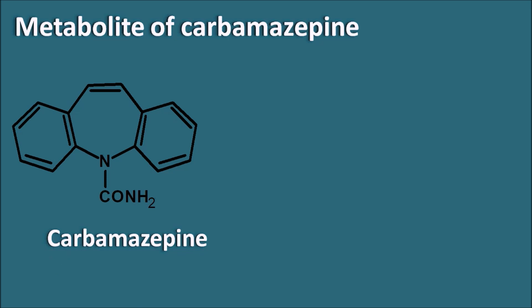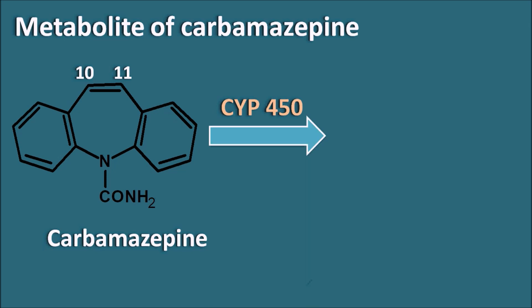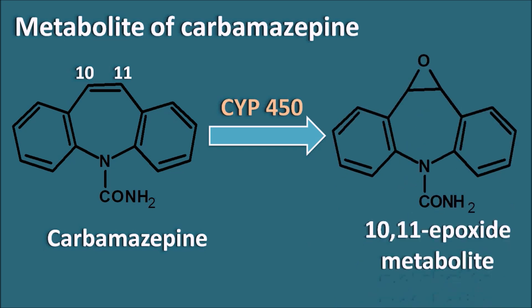Regarding the metabolite of carbamazepine: it has a double bond at the 10th and 11th position, which makes it susceptible to metabolic oxidation. Cytochrome P450 enzymes are responsible for its metabolism, converting carbamazepine to its 10-11 epoxide metabolite. This 10-11 epoxide is an active metabolite that also blocks sodium channels and is responsible for some side effects such as aplastic anemia.